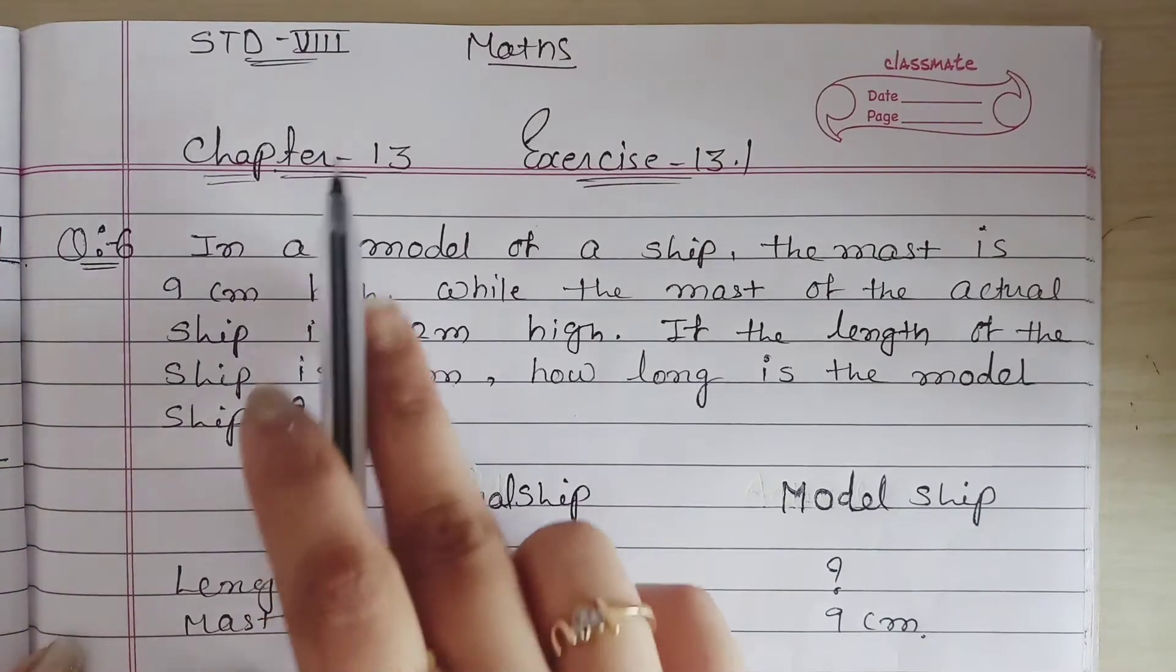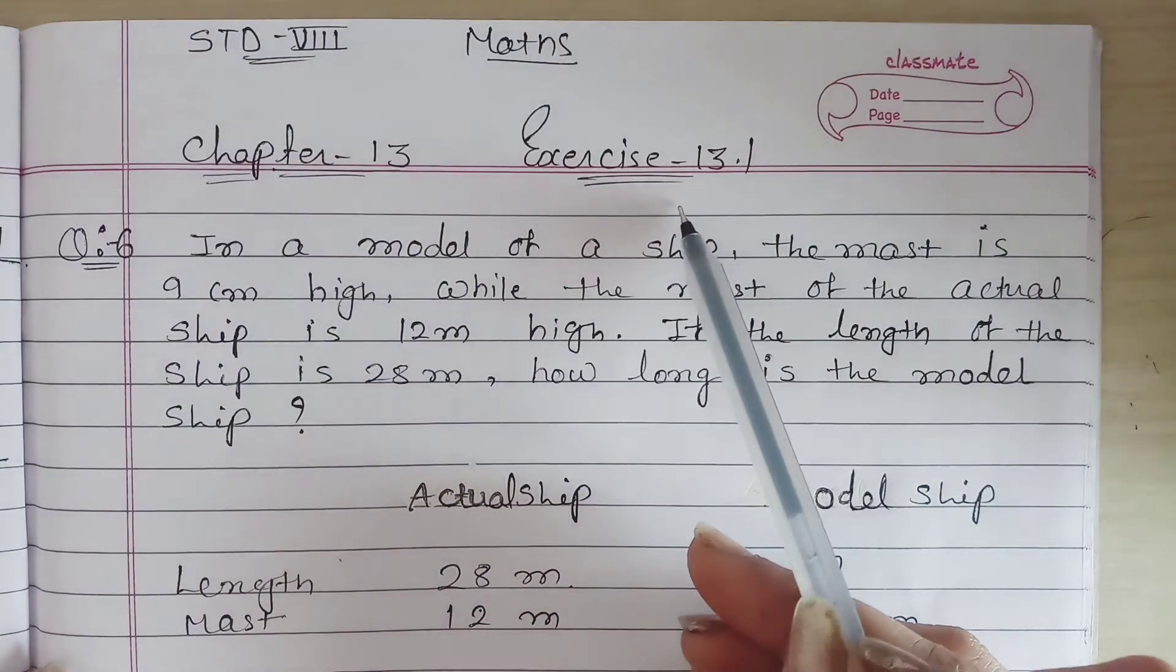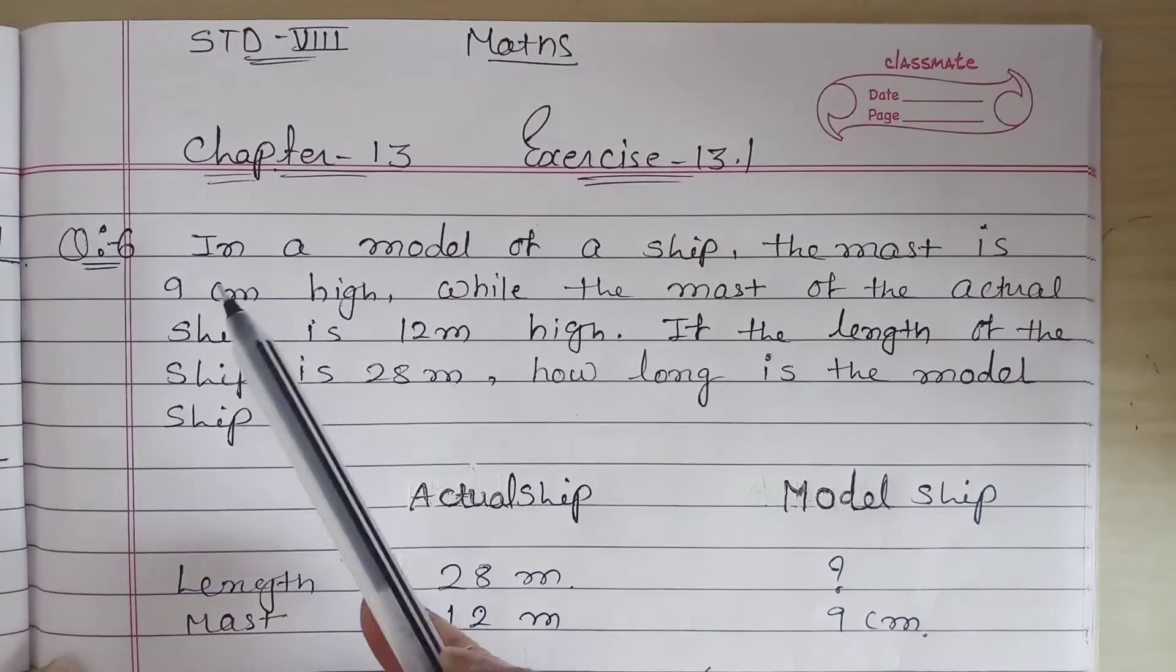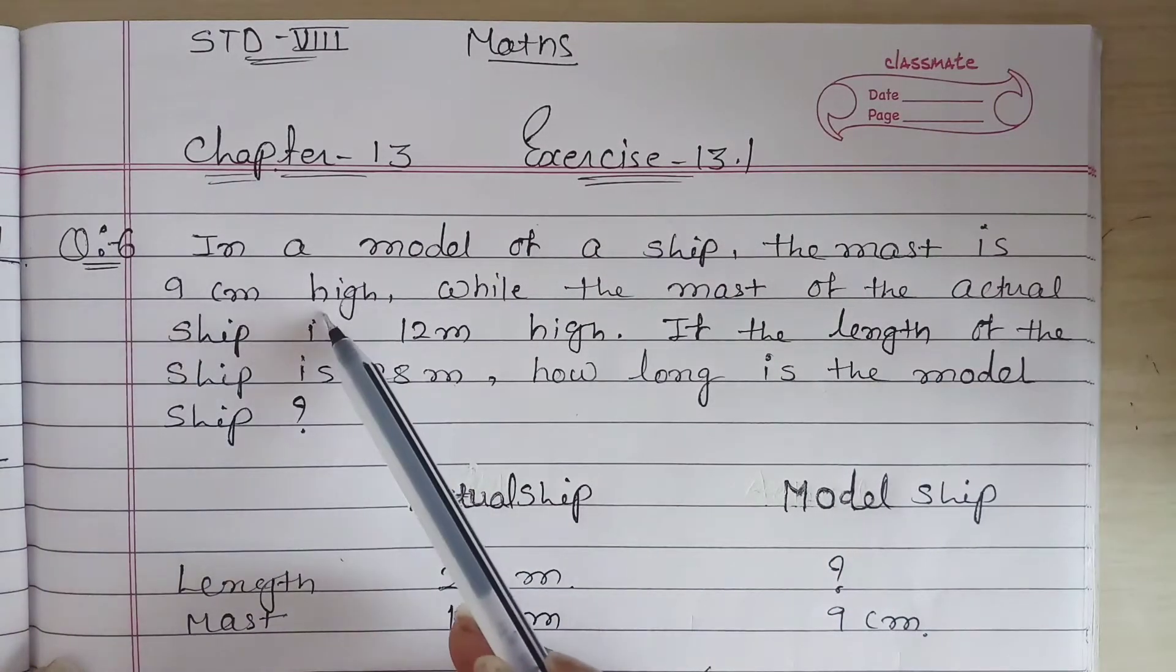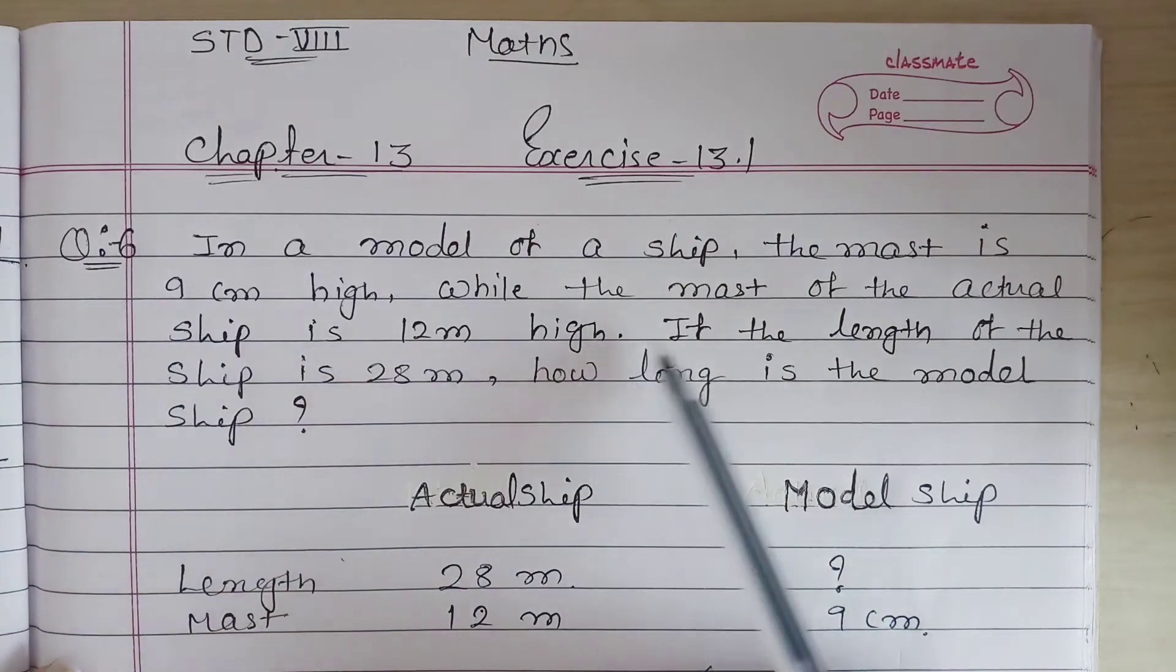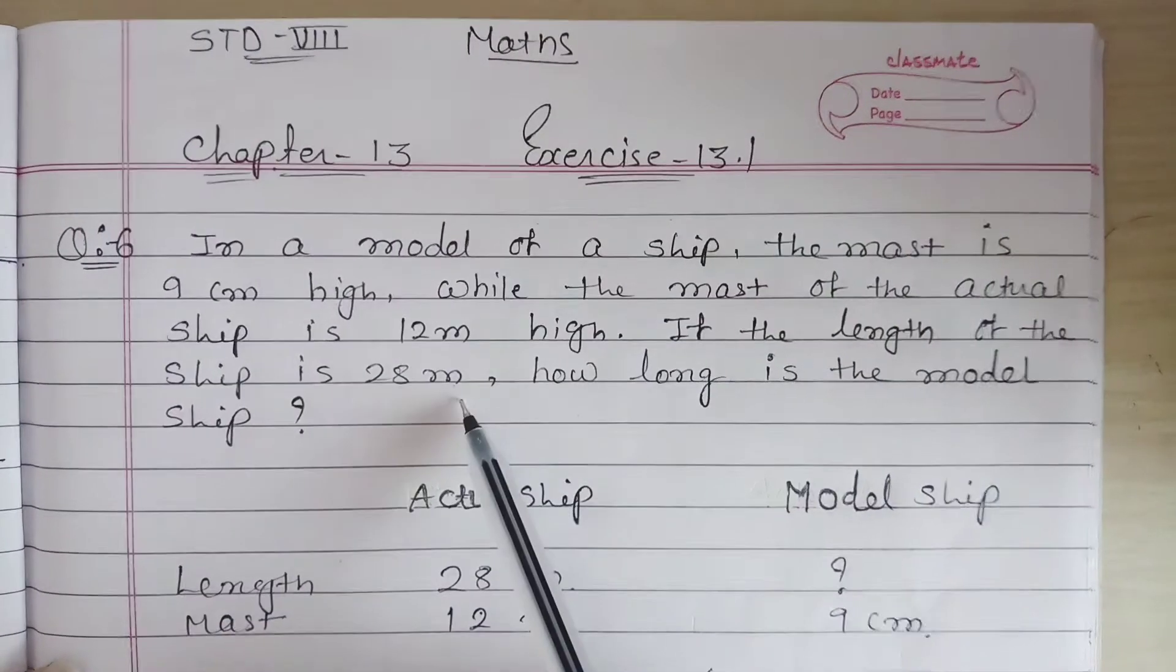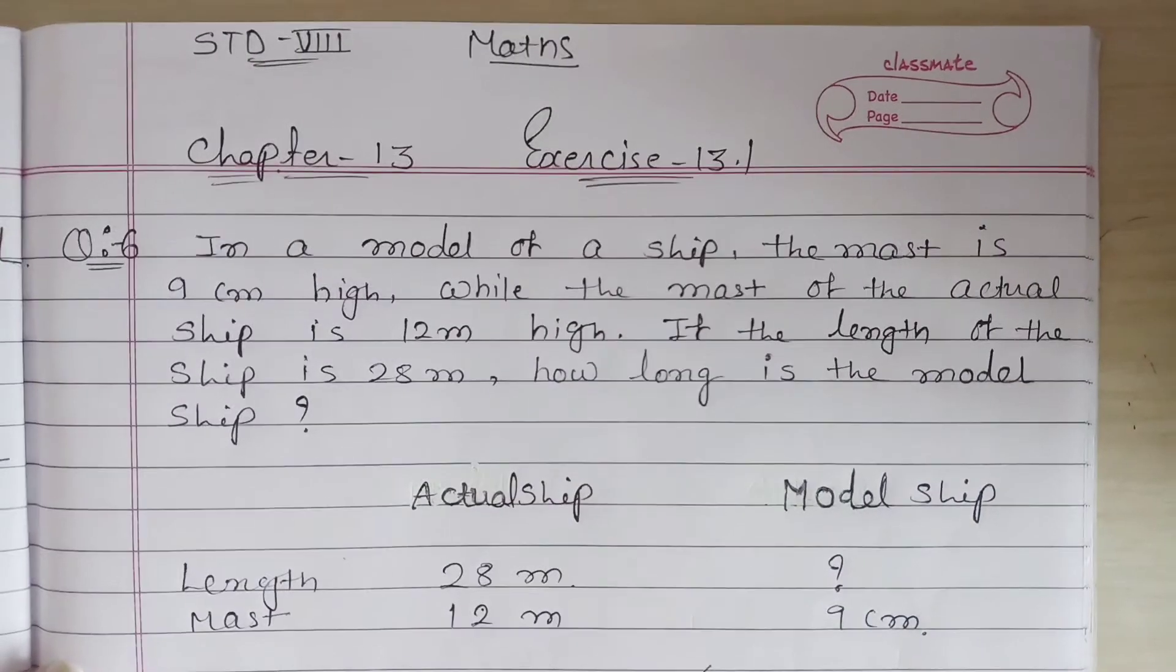Hello students, so today we're going to learn standard 8th math, chapter number 13, exercise number 13.1, question number 6. In a model of a ship, the mast is 9 centimeter high while the mast of the actual ship is 12 meter high. If the length of the ship is 28 meter, how long is the model ship?